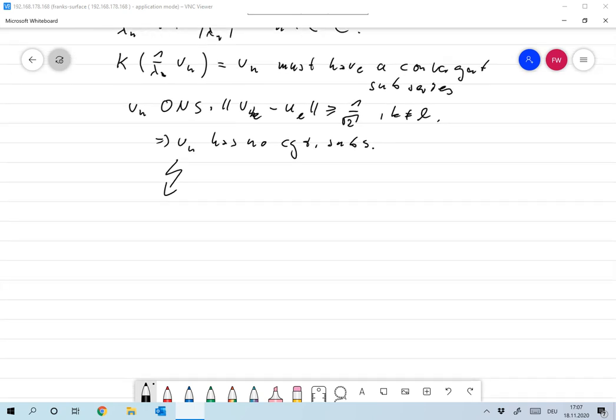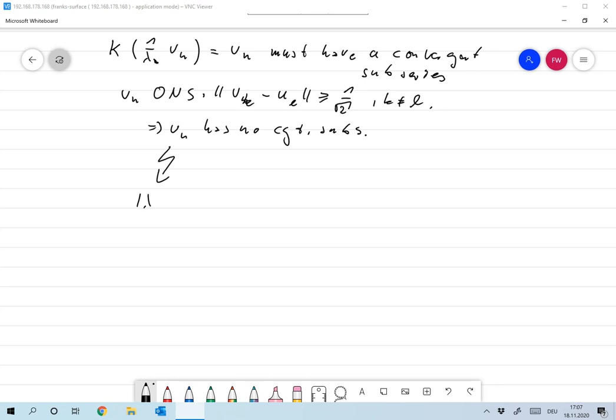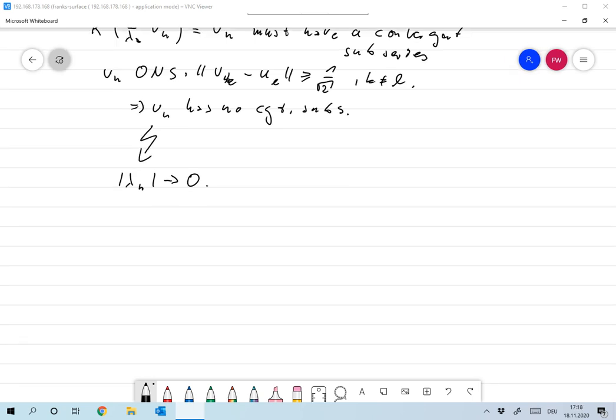The λₙ cannot be bounded from below by any number that's larger than zero. So if there are infinitely many eigenvalues, then we find that λₙ converges to zero. And I will now sum this result up in the beginning of the next video.